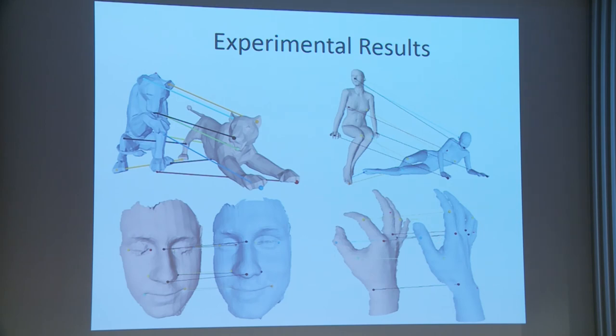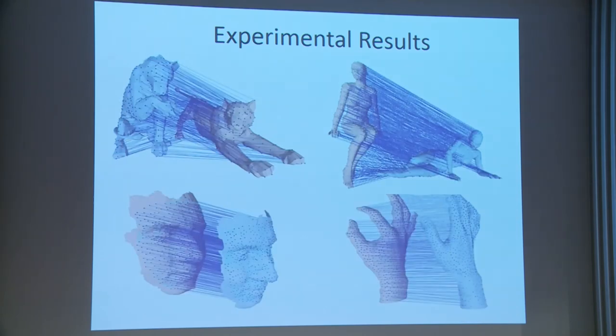Doing that yields fully automatic correspondence results, and going even further gives highly dense mappings between shapes.